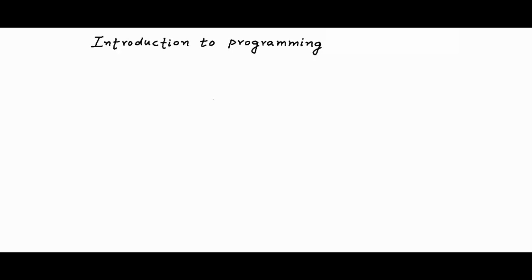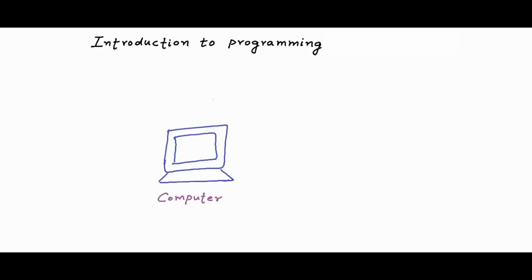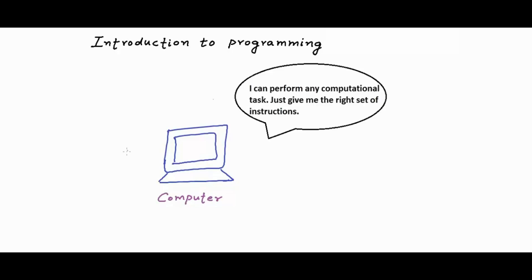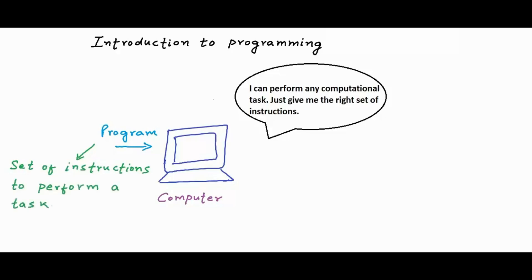Let's get started. Unlike most other machines that can perform a finite set of predefined tasks, a computer is a general purpose machine that can perform any computational task. All you need to do is give it a program, which is nothing but a set of instructions to perform a task. A computer is nothing in itself without programs. All the tasks are performed through programs.